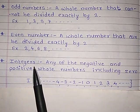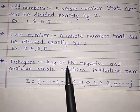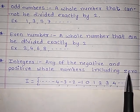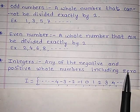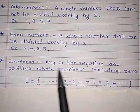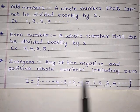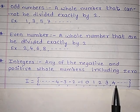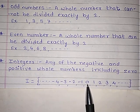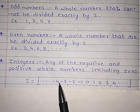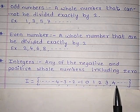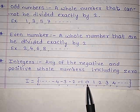Next: integers. Any of the negative and positive whole numbers including 0. Integers contain all the negative numbers, all the positive numbers, and 0.